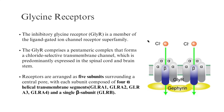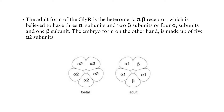Glycine Receptors: The inhibitory glycine receptor is a member of the ligand-gated ion channel receptor superfamily. It comprises a pentameric complex that forms a chloride-selective transmembrane channel, predominantly expressed in the spinal cord and brainstem. Glycine receptors are arranged as five subunits surrounding a central pore, with each subunit composed of four alpha-helical transmembrane segments and a single beta subunit. The adult form is the heteromeric alpha-1 beta receptor, believed to have three alpha-1 subunits and two beta subunits, or four alpha-1 subunits and one beta subunit.